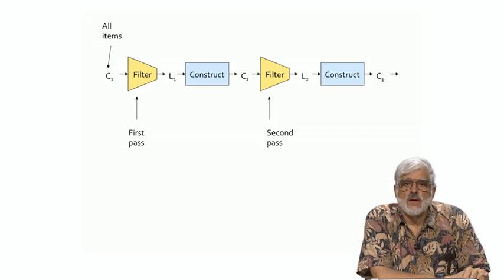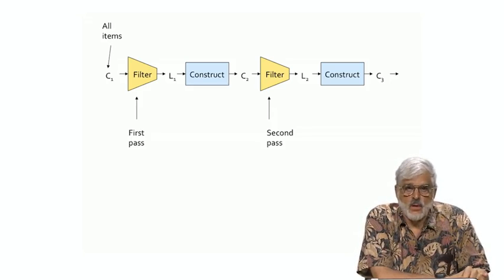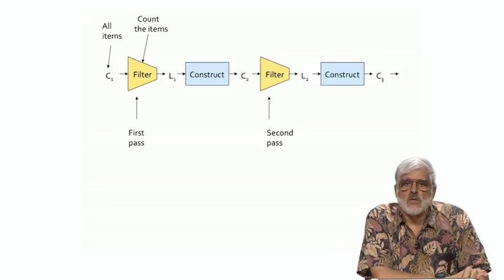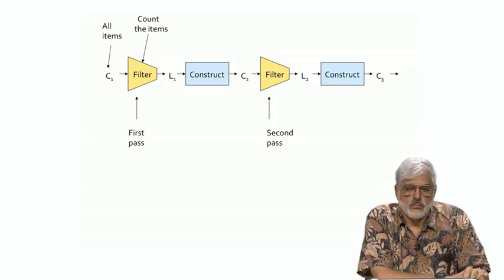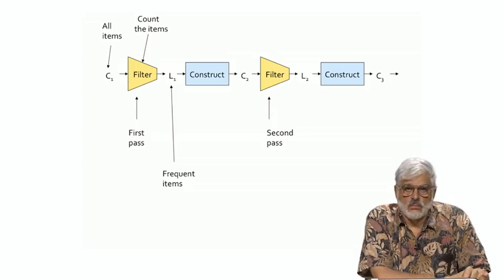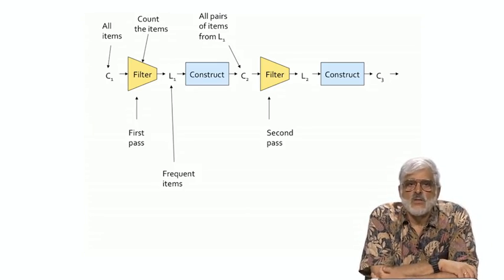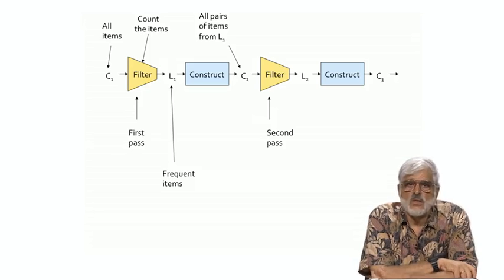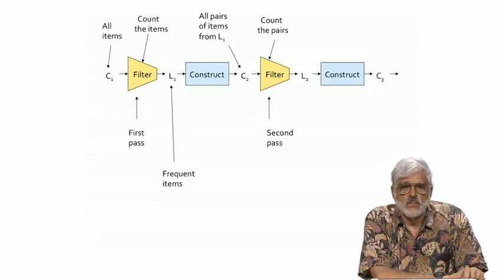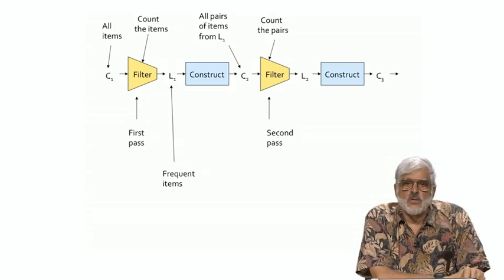We start with C1, the set of candidate singleton itemsets. These are all items, since we have no way of eliminating any items without looking at the data. The filter step for the first pass counts the items and defines those that are frequent. So the set L1 is just the frequent items. From L1, we construct C2, the set of candidate pairs for the second pass. In this case, we don't actually do anything. The set C2 is defined implicitly from the list of items in the set L1. The filter step for the second pass counts all the pairs in C2, and the result is the truly frequent pairs of items.